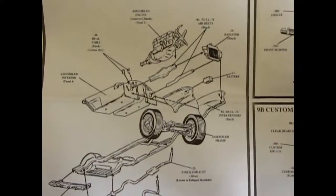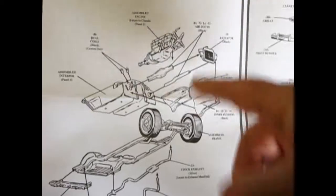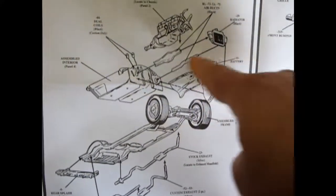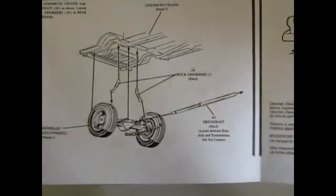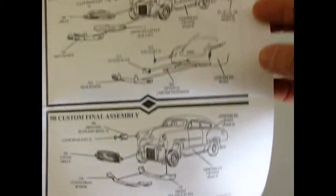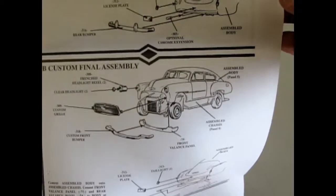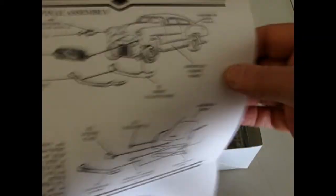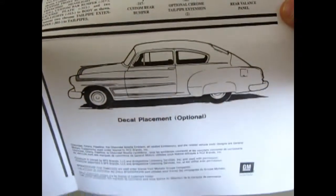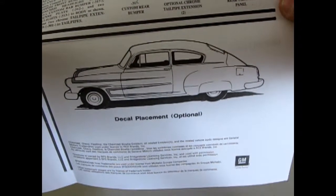And then we have our engine assembly going in on the frame. Those are your inner fenders. And of course the air ducts and our rear axle with springs. And finally there's the instructions for the stock assembly as well as the custom. And you get that really nice custom grille and French headlights which were popular in the 50s. And our placement of our decals.